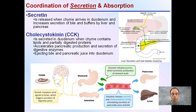So we can look here — here's our food, here's our stomach, here's our intestine. The pancreas and liver are all coming together here, and the intestine releases secretin and cholecystokinin, stimulating the secretion of pancreatic juice and bile.